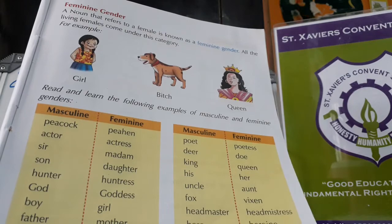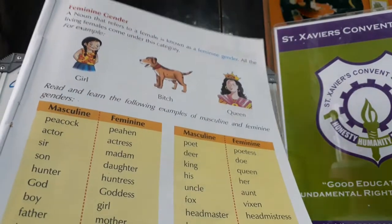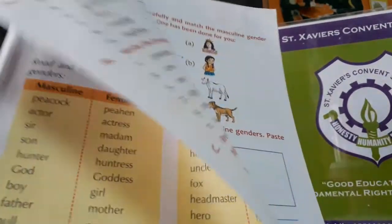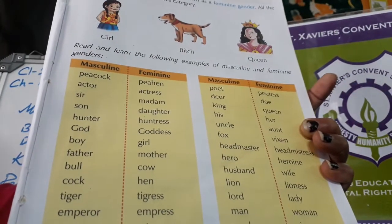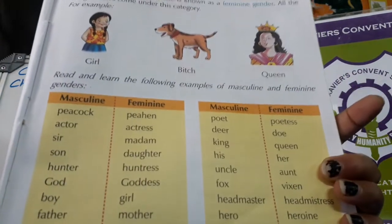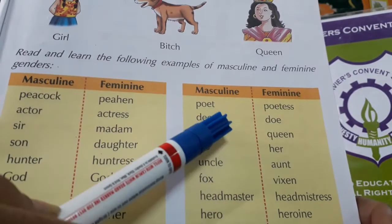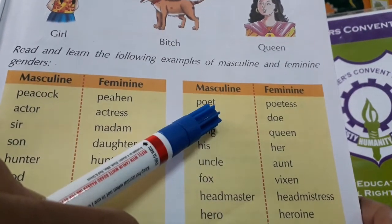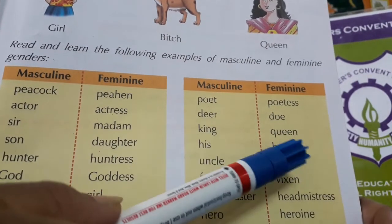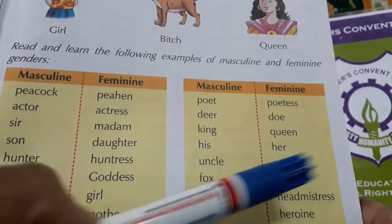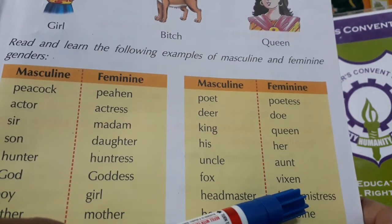More examples: tiger–tigress, emperor–empress, master–mistress, poet–poetess (in Hindi, kavi–kavitri), deer–doe (the feminine gender of deer is doe), king–queen, uncle–aunt, fox–vixen, headmaster–headmistress.